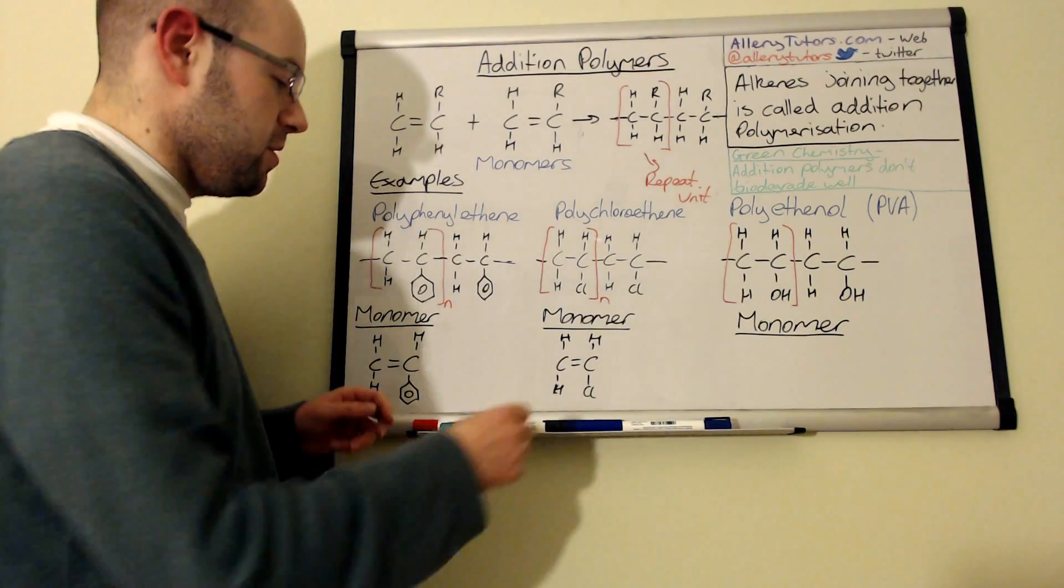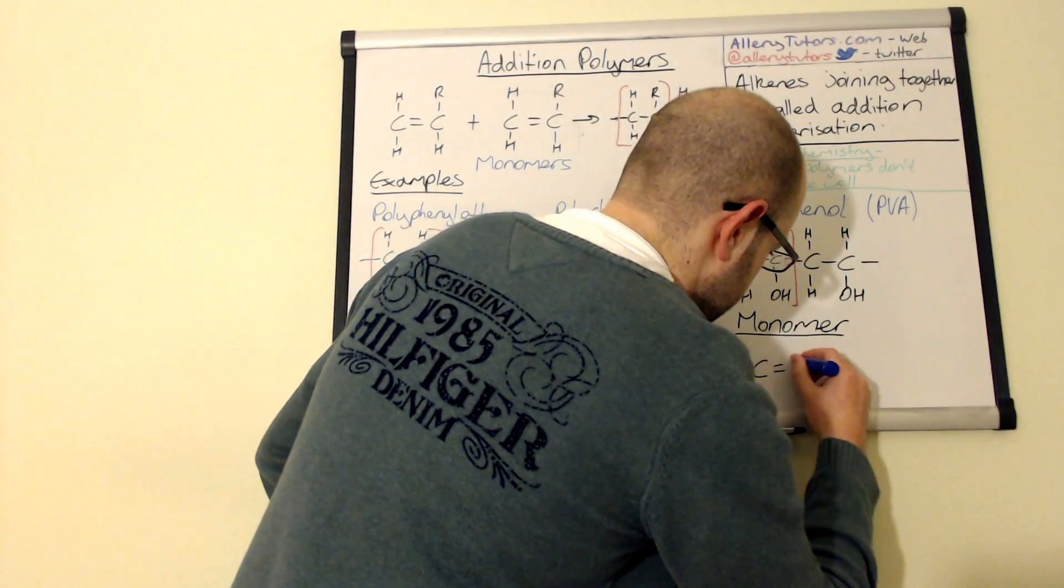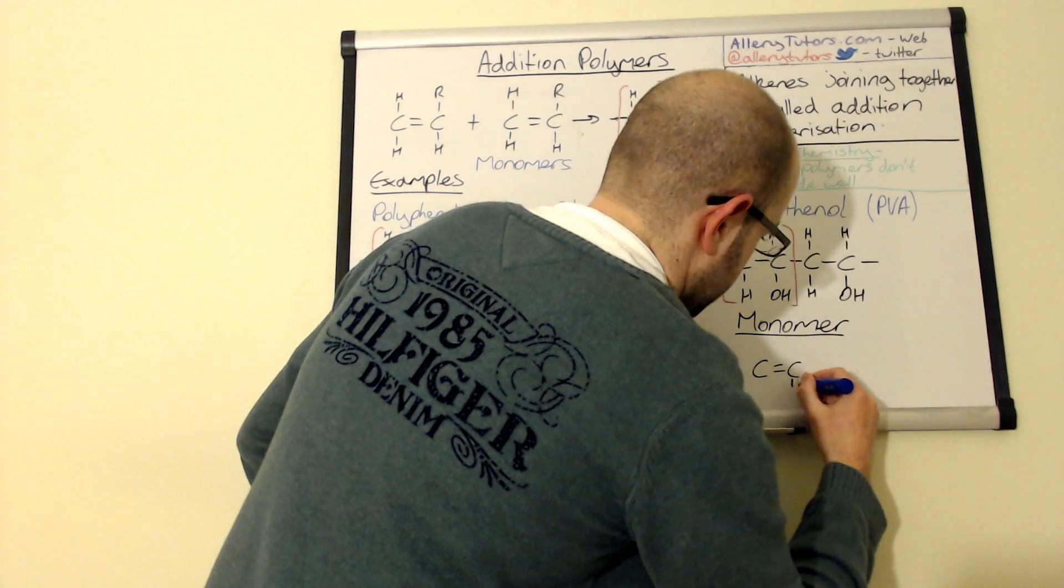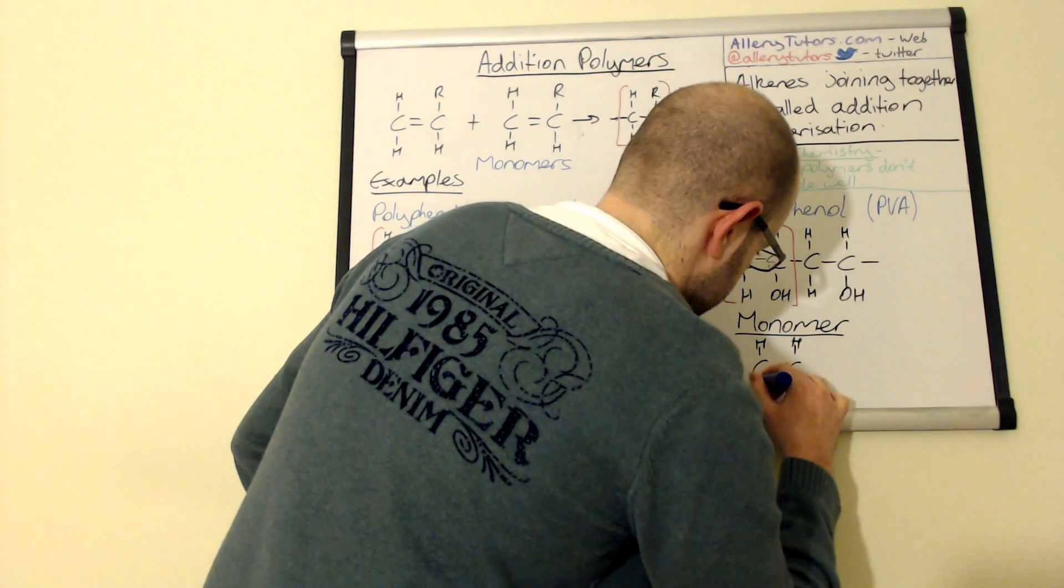The monomer unit for this reaction is that and we have an alcohol on the bottom, a hydrogen, a hydrogen and a hydrogen.